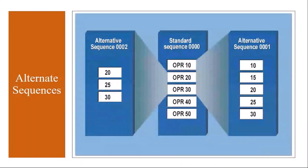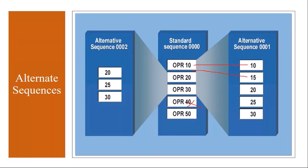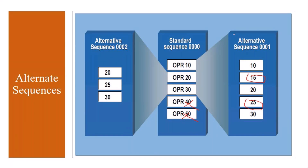Suppose you have a routing with a standard sequence having five operations — operation 10, 20, 30, 40, and 50. But sometimes, due to some reasons, they will not execute operation 40. Instead, they execute operation 10, then another operation called 50 with a different work center, then operation 20 as usual, then 25, then 30 — that's all, with no execution of 40 and 50 from the standard. Operations 15 and 25 are executed on different work centers, so this becomes alternate sequence one.